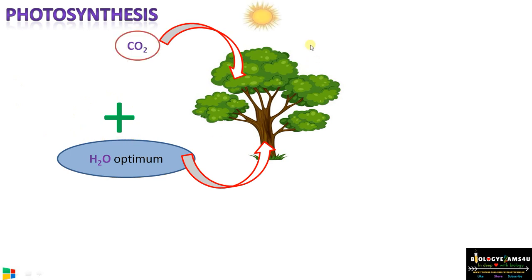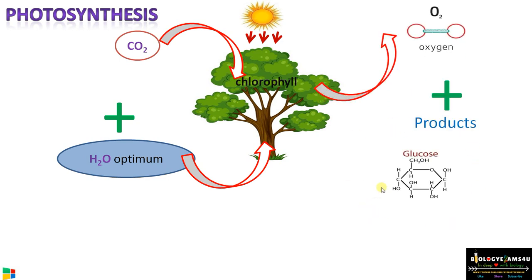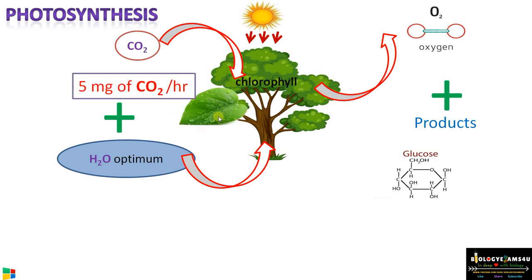Sunlight and chlorophyll are also factors; glucose is produced during the process along with oxygen, and even oxygen is a factor that controls photosynthesis. Think of a situation where all the factors are optimum except carbon dioxide — this leaf can utilize 5 mg of carbon dioxide per hour.